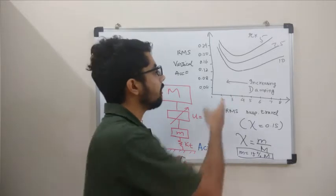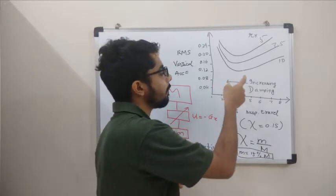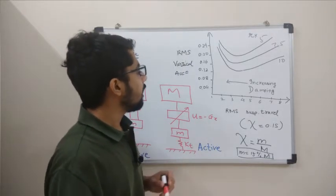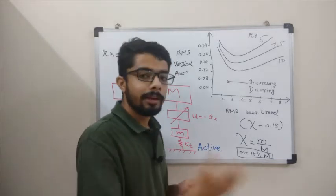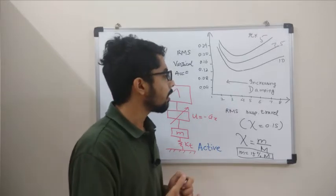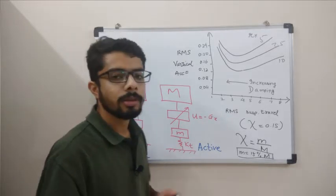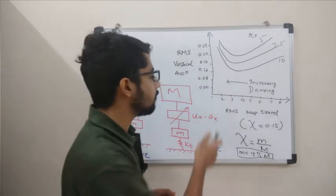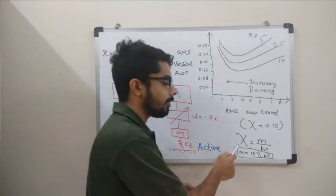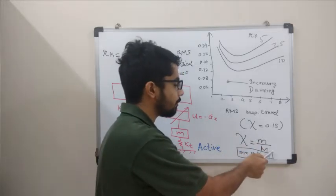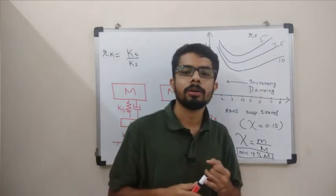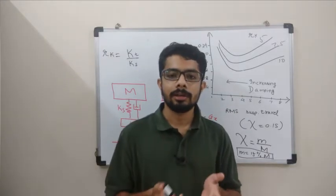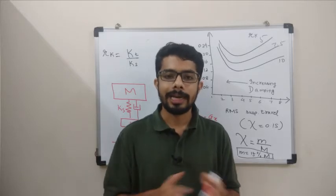This graph is for passive suspension. As a hint for active suspension — since it takes command from the ECU, it will have more efficiency and the graph will look different, which will be covered in the next video. The designer's freedom mainly lies in determining the stiffness ratio and the ratio of unsprung mass to sprung mass. These are the two main values the designer uses to calculate the optimum damping effect from the graph, whether the suspension is active or passive.